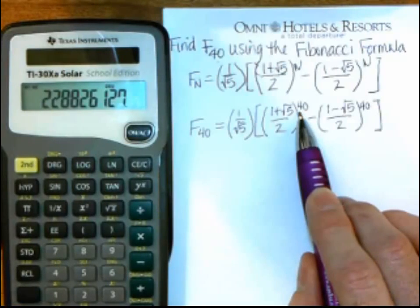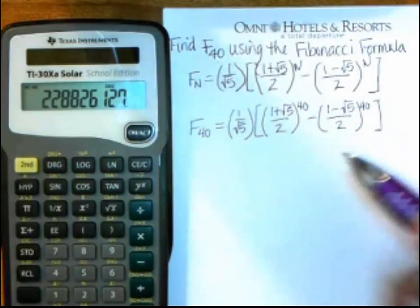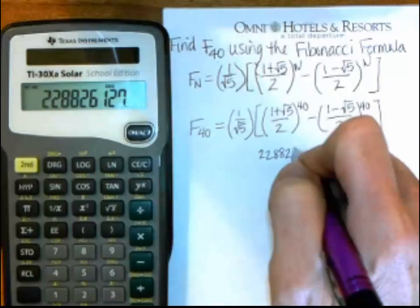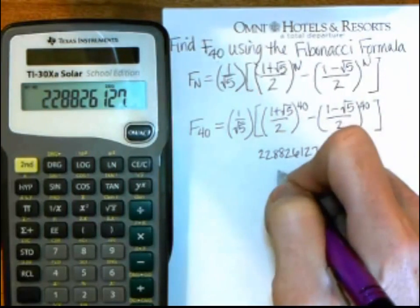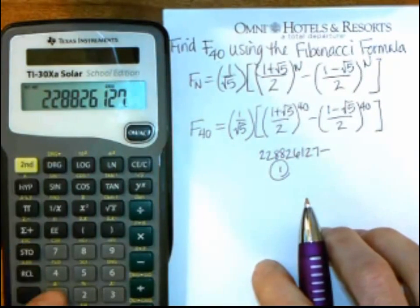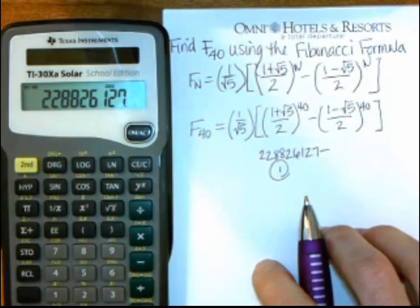And I get a very large number, 228826127, and I want to store that in bin 1, so to do that, remember push store in bin 1, and you don't have to do equals.